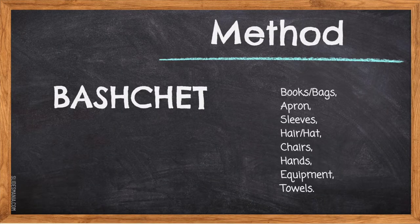BECHET stands for the beginning steps you need to do at the start of your lab. B stands for books and bags — they should be away at the back of the classroom or under your table. A stands for apron — which you need to put on to help protect your clothing. S stands for sleeves — you need to roll them up past your elbows.